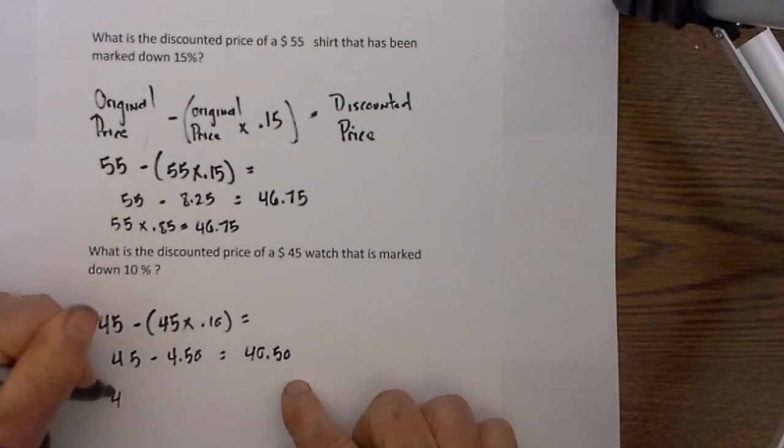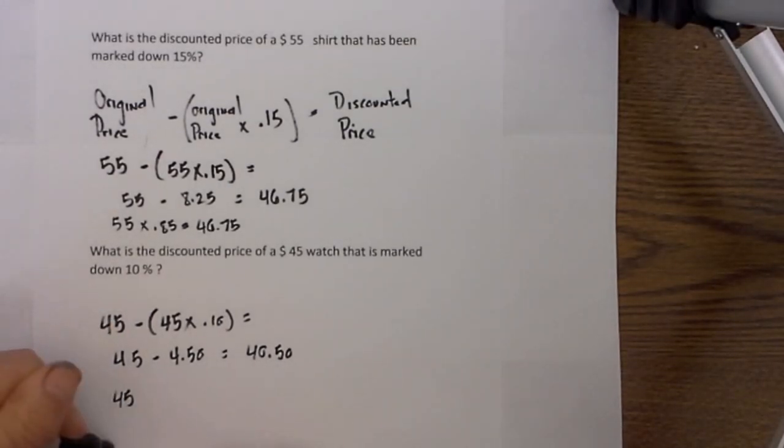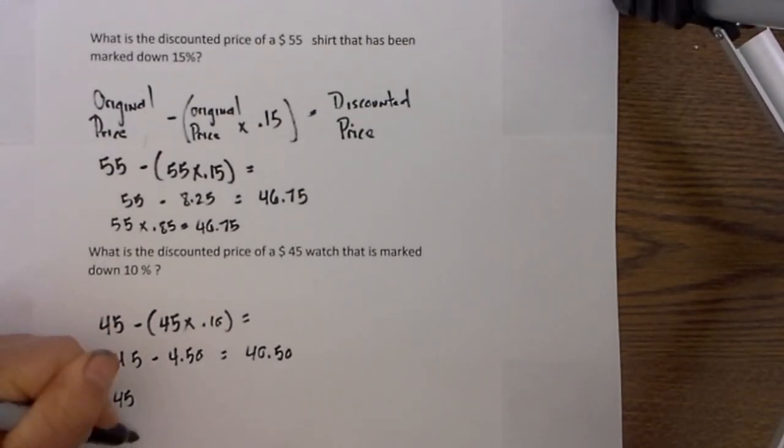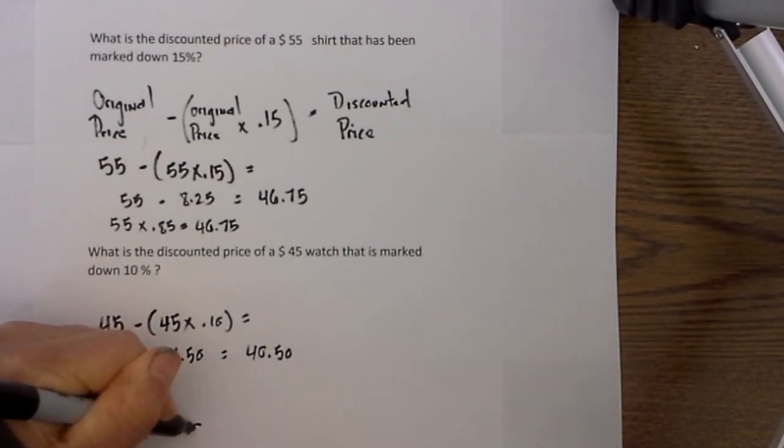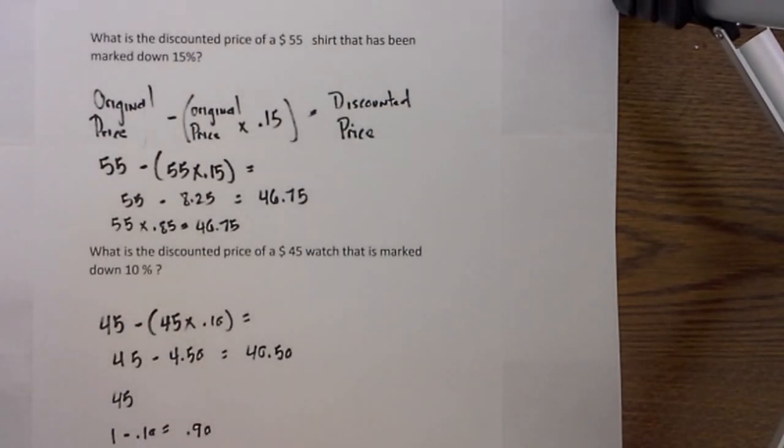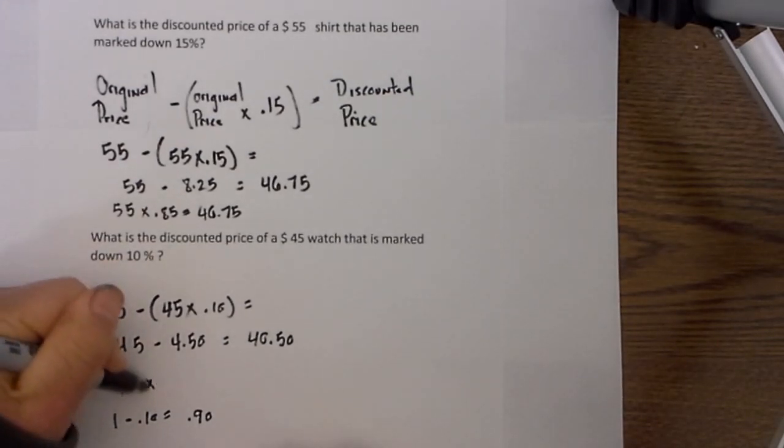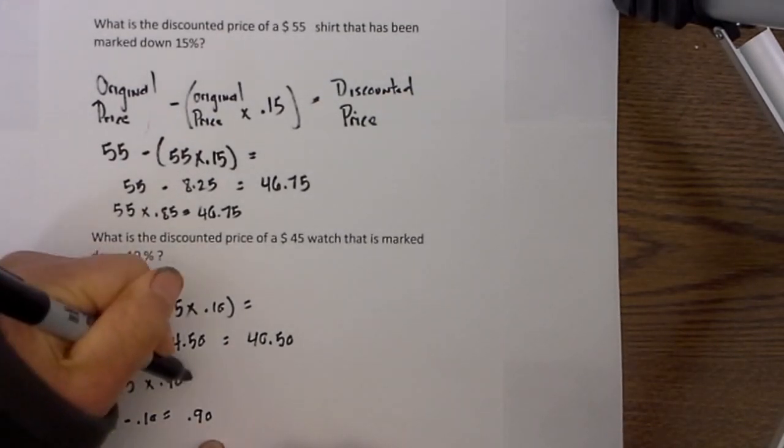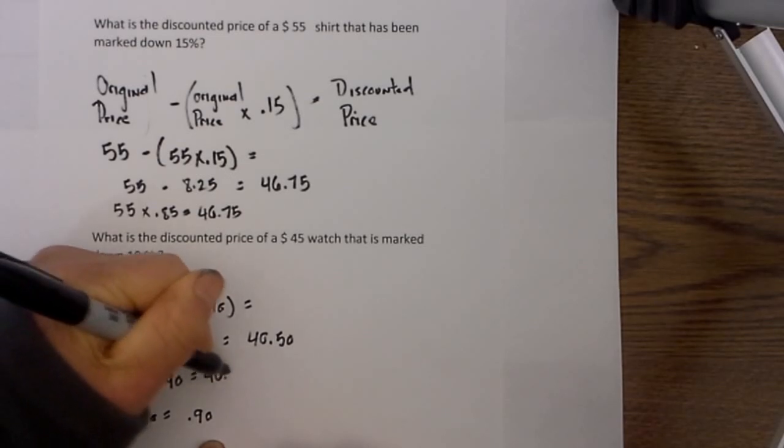Again, the shortcut method would be like this. If you take 1 minus .10, that will give you .9, and then if you multiply 45 times .9, you will get the same answer.